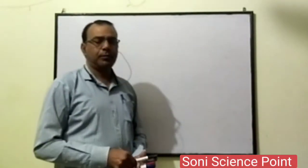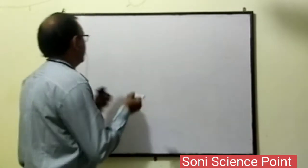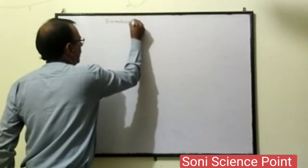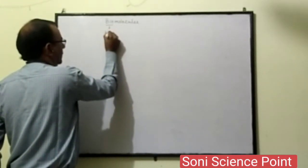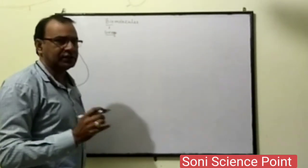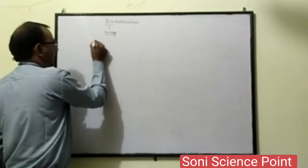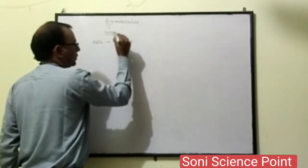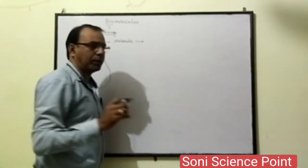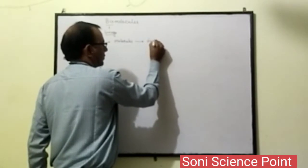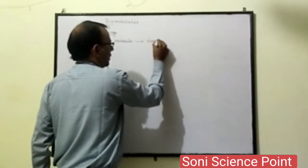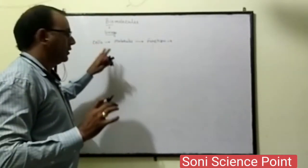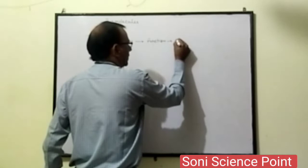Hello students, today we are going to start Plus One Biology's new chapter: biomolecules. As the name shows, 'bio' means living — these are the substances which are found in living cells. The cell contains molecules, and these molecules help to perform the functions of the cell. Collectively, there are different types of biomolecules present in the cell, and these are known as the cellular pool.